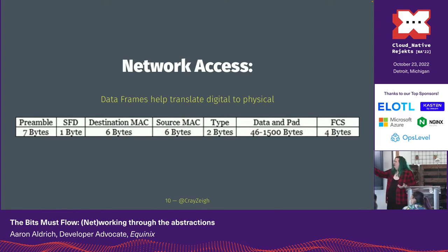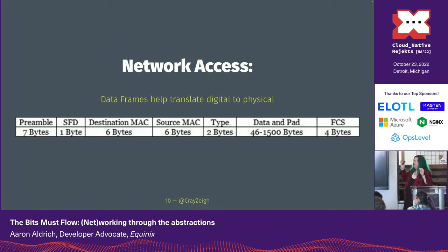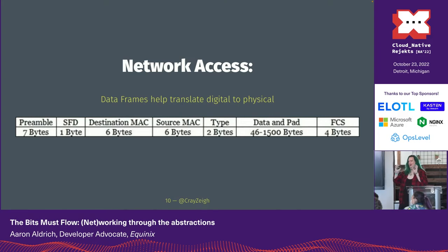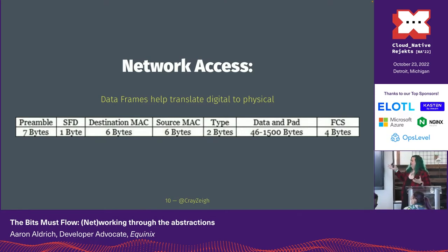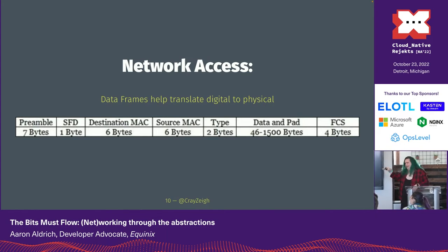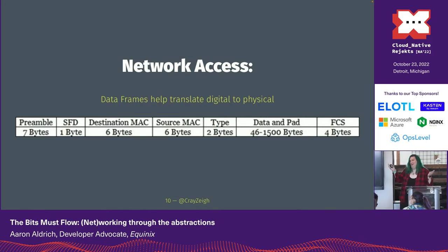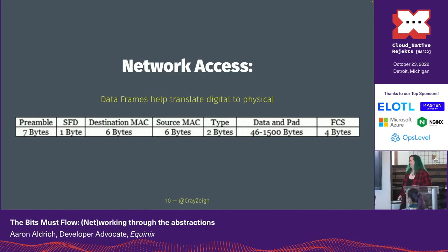Data frames at the network access layer use MAC addresses to start translating digital information into physical delivery. The frame has headers showing where it's coming from and where it wants to be, plus error checking on the back end — a cyclical redundancy check — to verify the ones and zeros arrived in the right order.